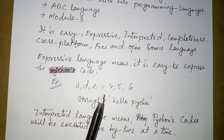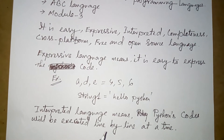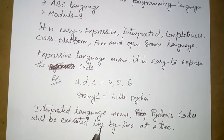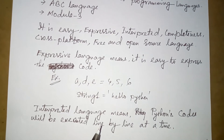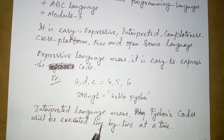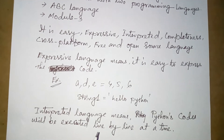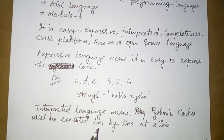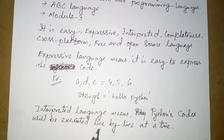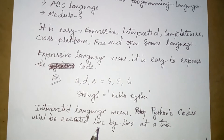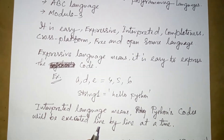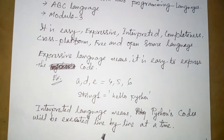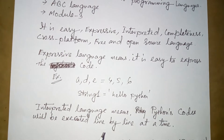We have to learn about completeness. Completeness means that when we install Python, we can use its standard library. This standard library helps us use Python effectively, and we can also find additional resources at python.org.